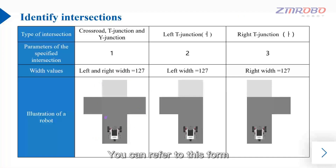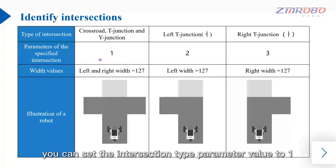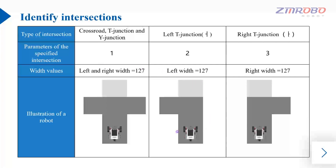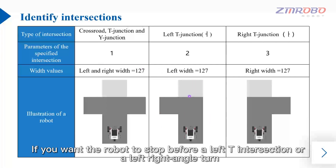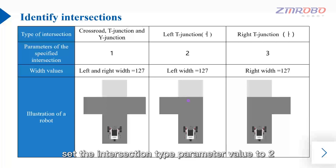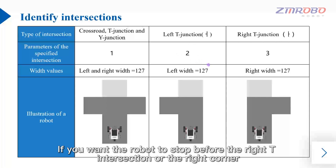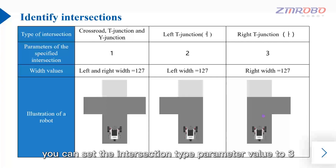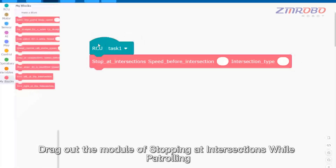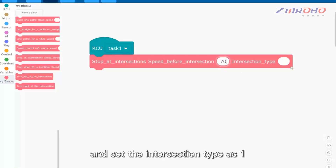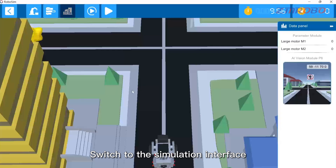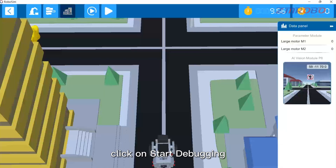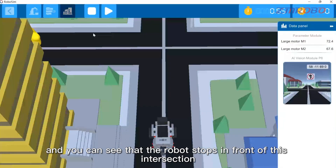You can refer to this form. If you want the robot to stop at a crossroad, T-junction, or Y-junction, set the intersection type parameter value to one. If you want the robot to stop before a left T-intersection or a left right-angle turn, set it to two. If you want the robot to stop before the right T-intersection or right corner, set it to three. Drag out the module, input speed 70 and intersection type one, then start debugging — the robot stops in front of the intersection.